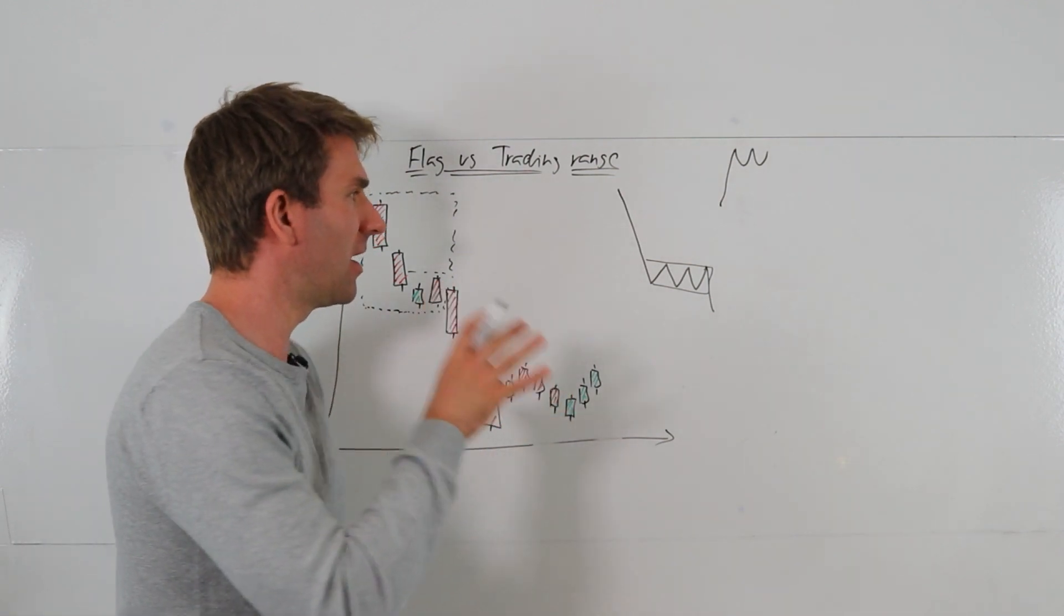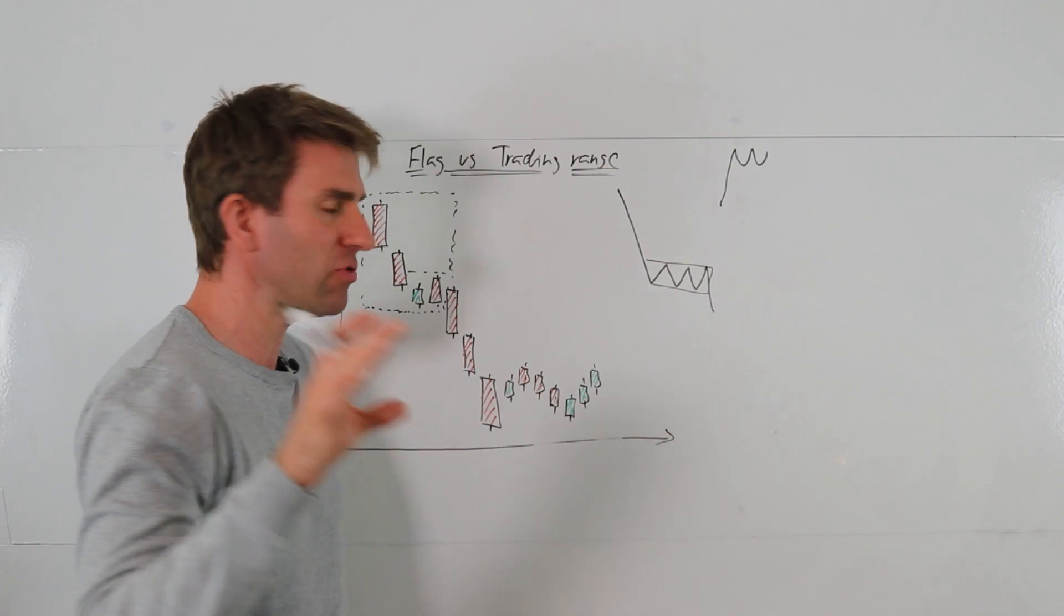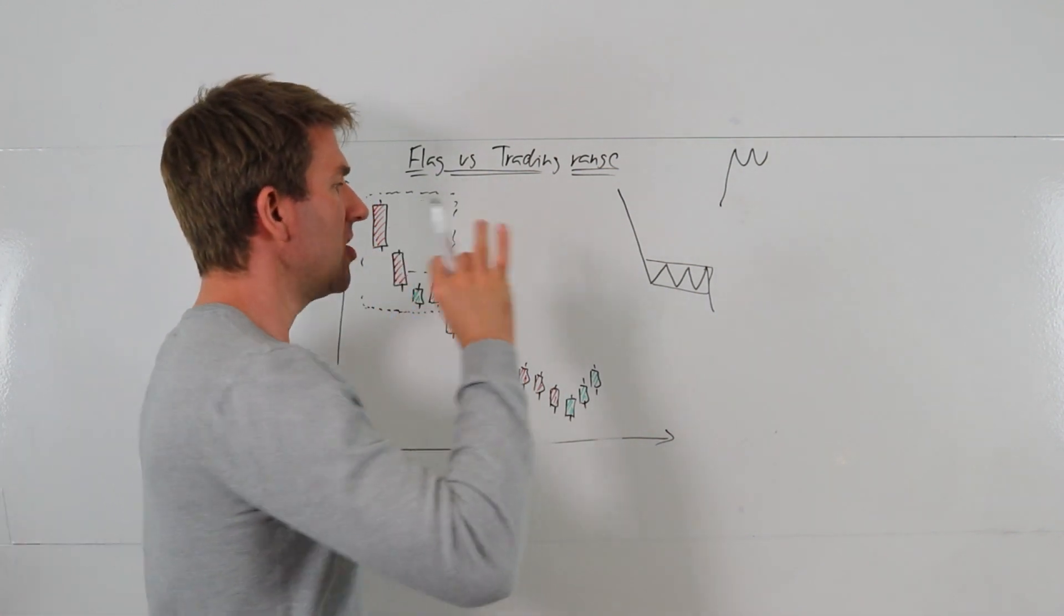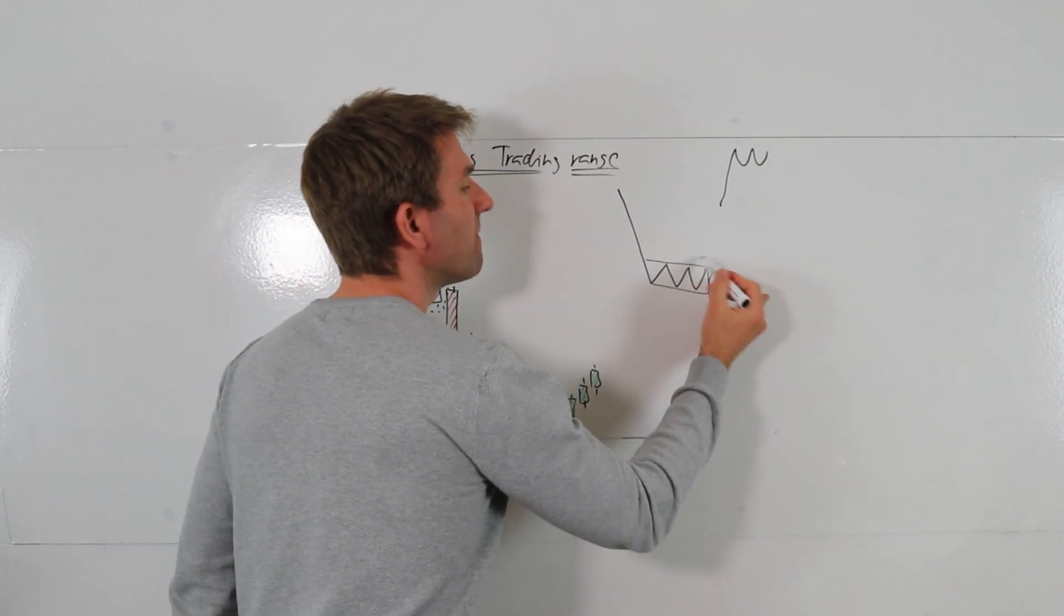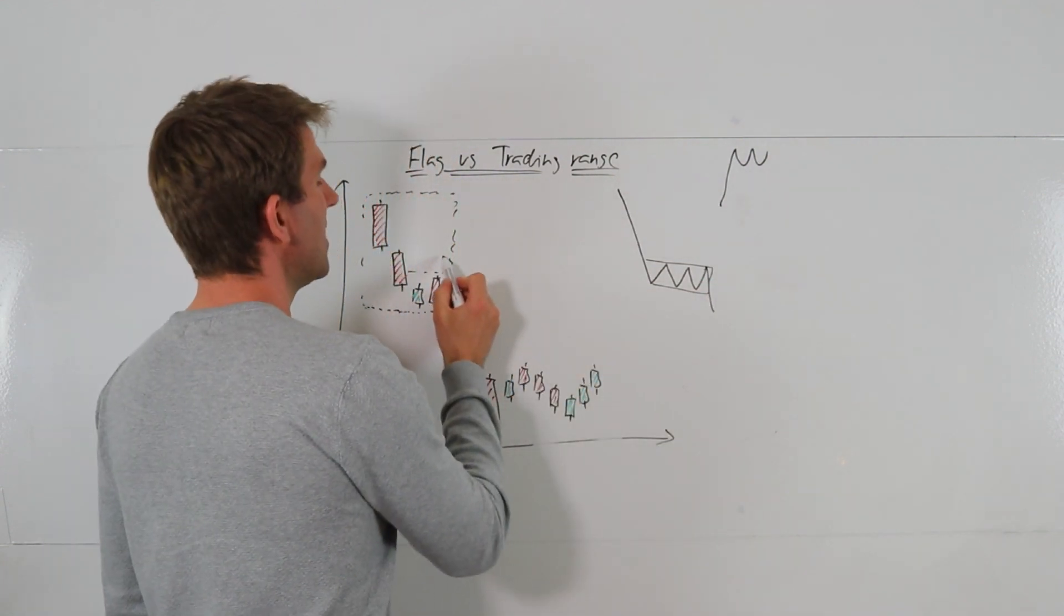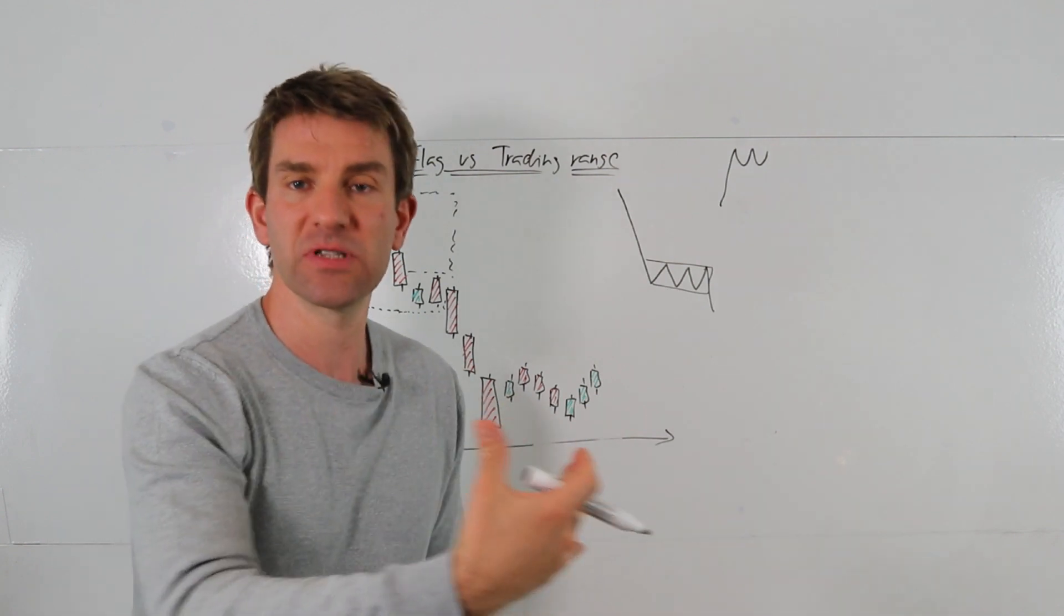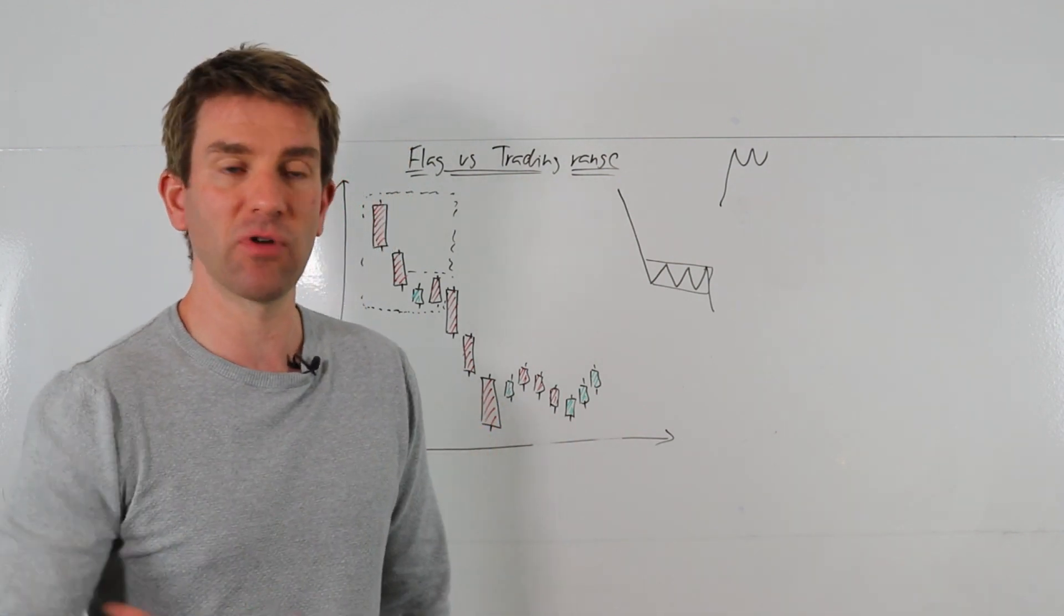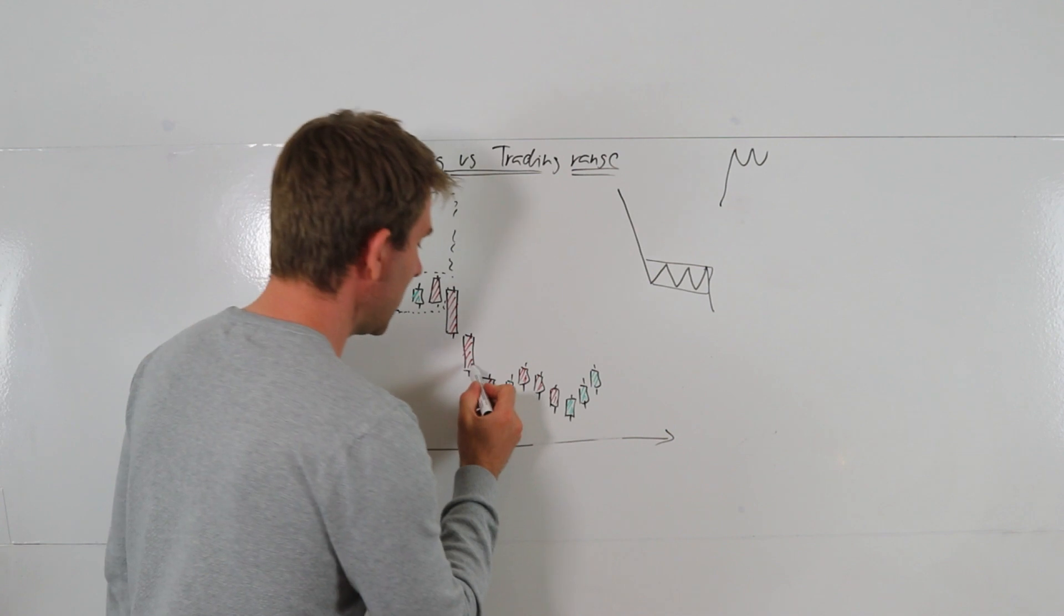So how do you trade them differently? With the flag, you very often can kind of fade a counter-trend move up. So let's say your bear flag, it pops up then rolls over, you might be able to have a go on that on the short side for continuation, preempt the kind of breakout.